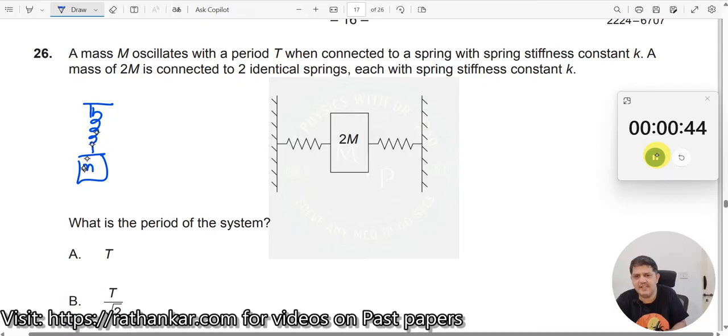Now, what is the expression for time period? Expression for time period is 2π times square root of m divided by k.